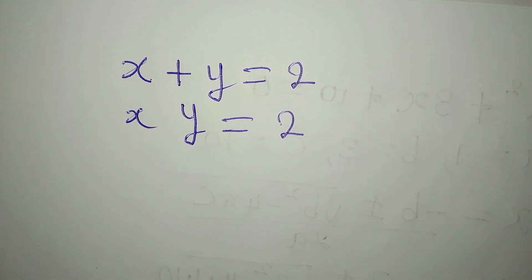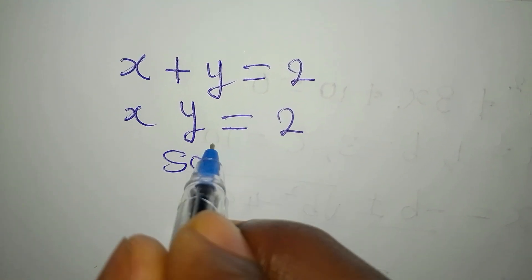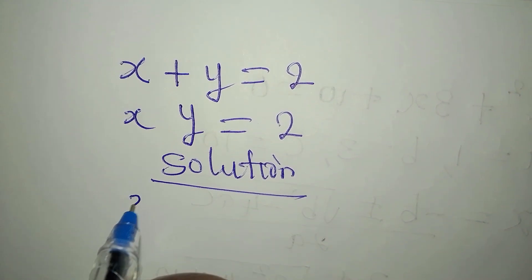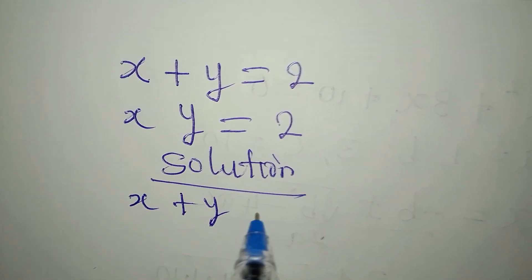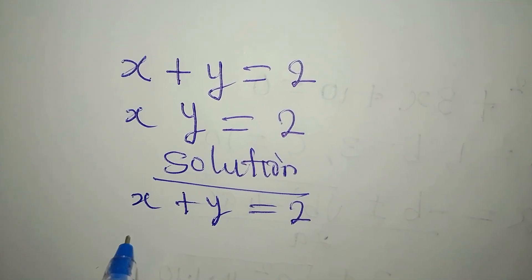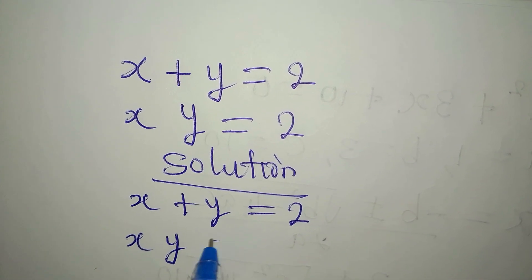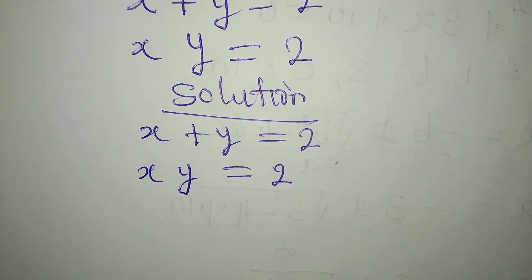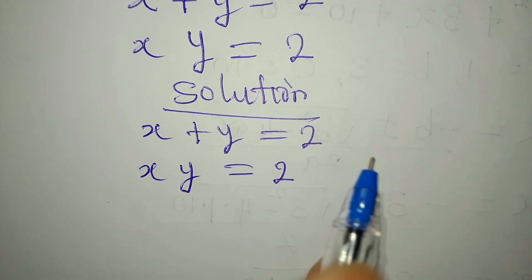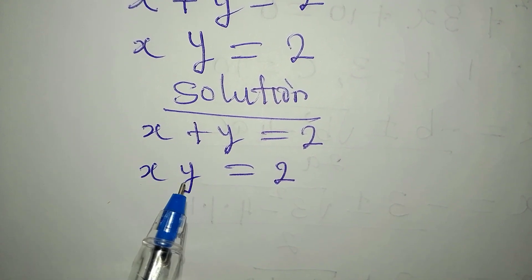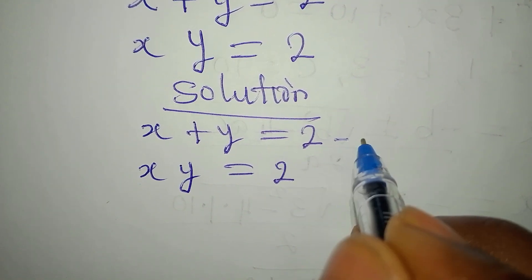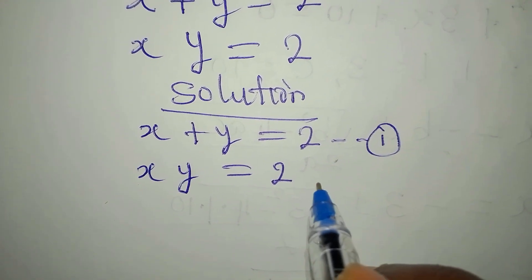Hello everyone. Here I have another problem to deal with, and we'll solve this simultaneously. X plus y equals 2, then x times y equals 2. The question is: can it be possible that x plus y gives 2 and x times y again gives 2? Let's see how we deal with this equation.